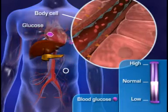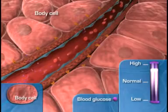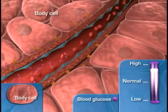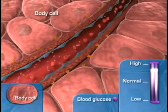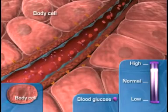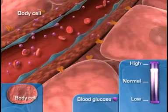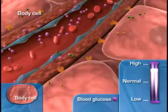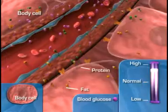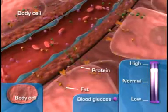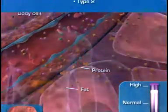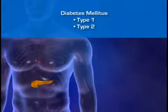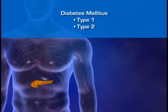With uncontrolled diabetes, glucose cannot move from the bloodstream into muscles or fat cells, leading inevitably to hyperglycemia — a blood glucose level higher than the normal fasting blood glucose level. Diabetes also leads to starvation of those cells and a subsequent increase in the breakdown of fat and protein as the cells seek alternative sources of fuel.